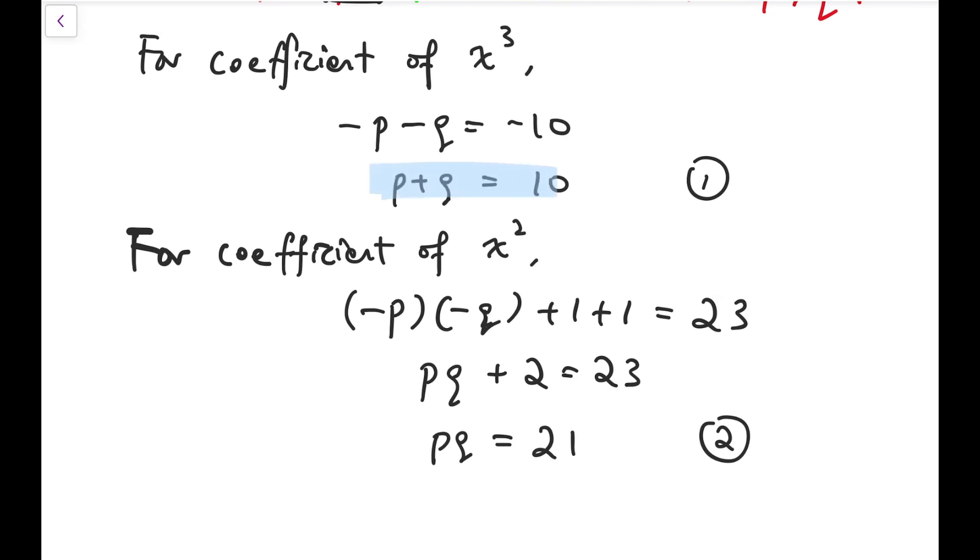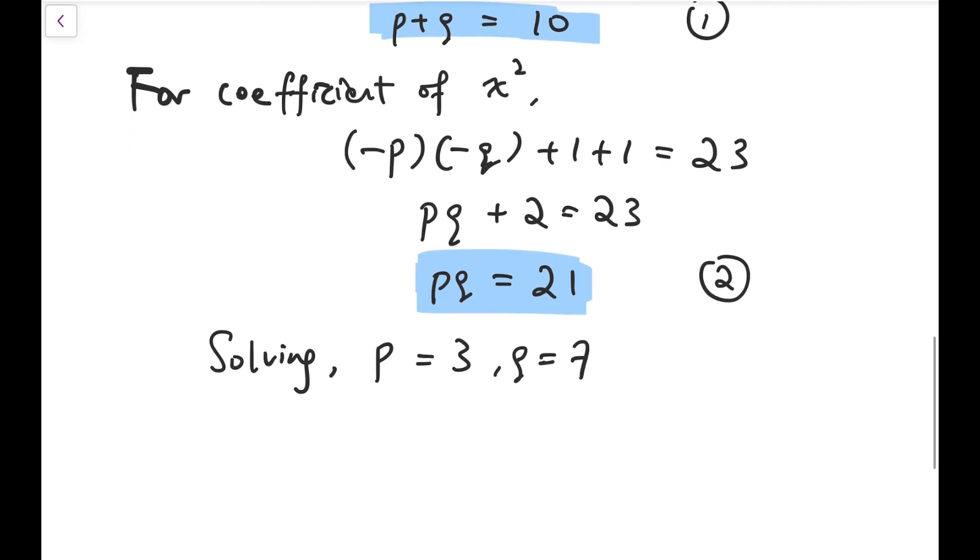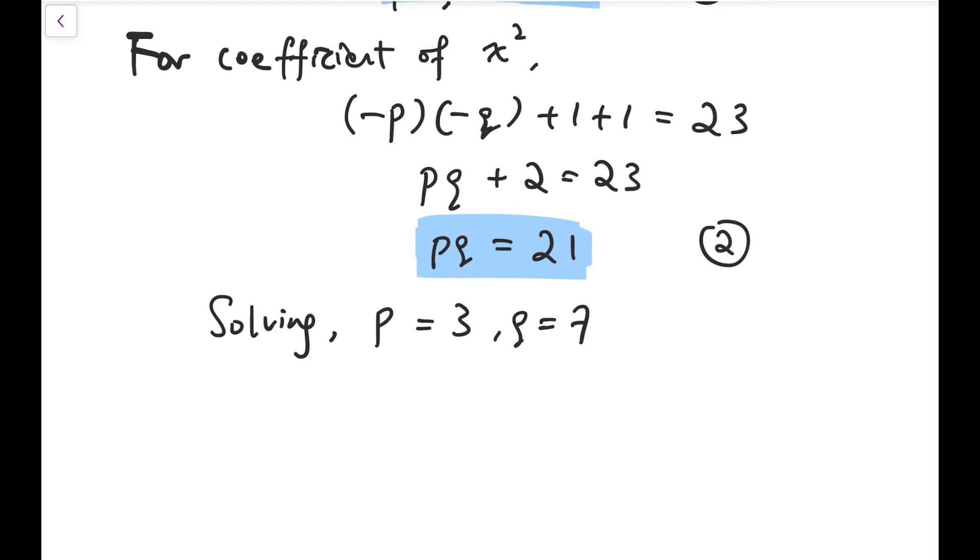So these two equations should be easy to solve. We can quickly see that p and q should be 3 and 7. Of course, you can reverse the order.